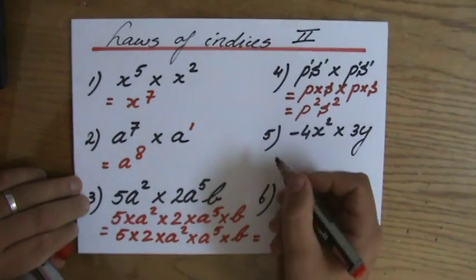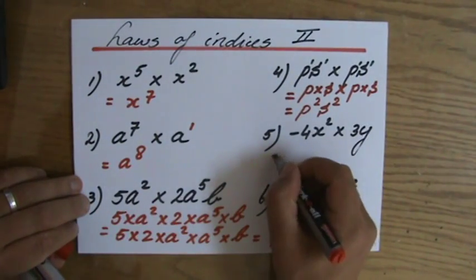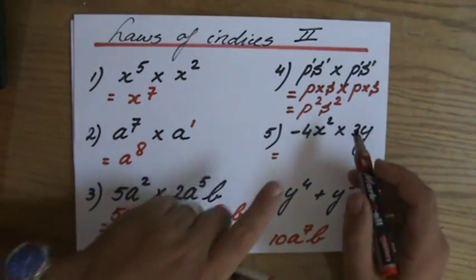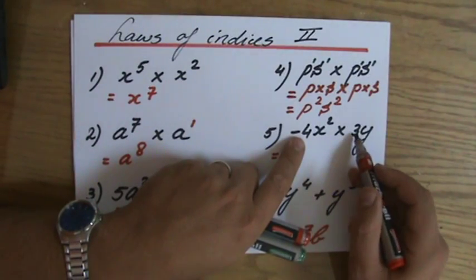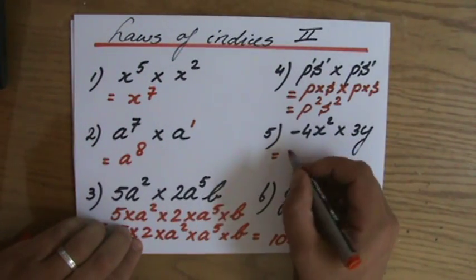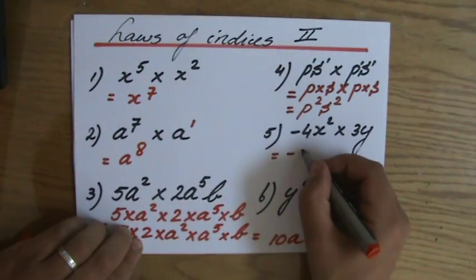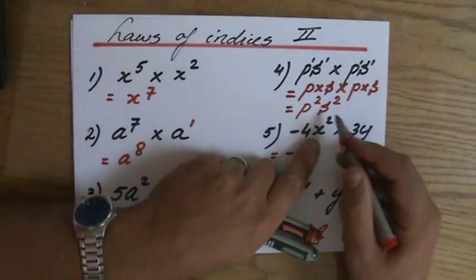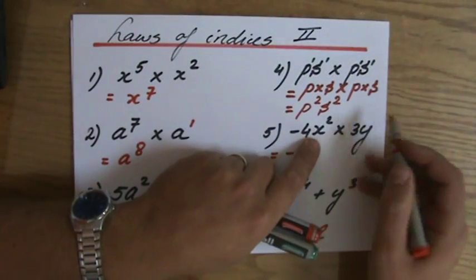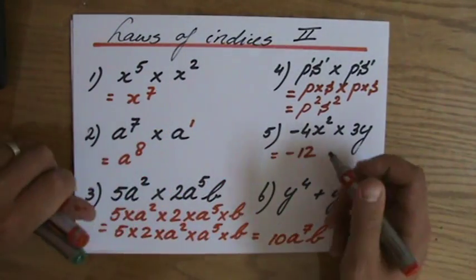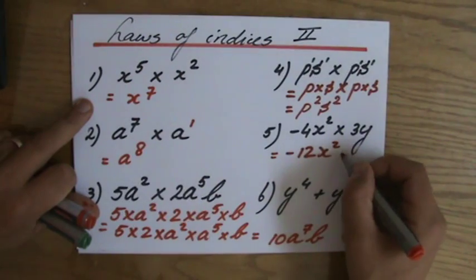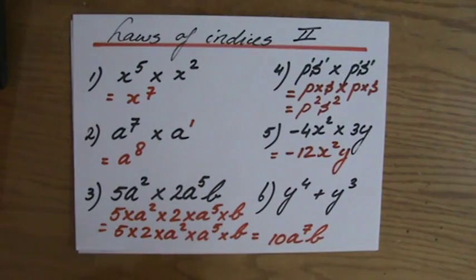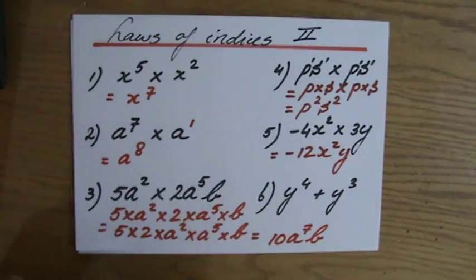Multiply those numbers: minus 4 times 3, which is minus 12. x squared times something else with an x? No, there's no other base with an x. So the answer is minus 12x squared y — that's the answer to question 5.